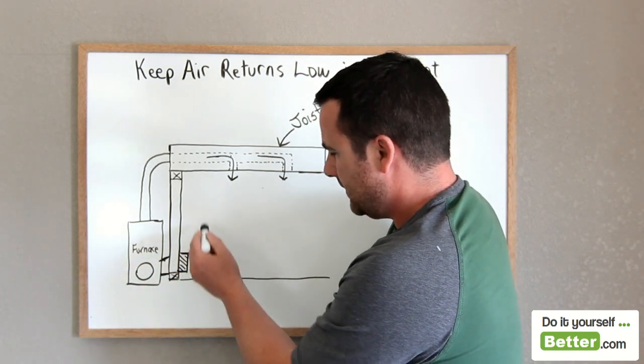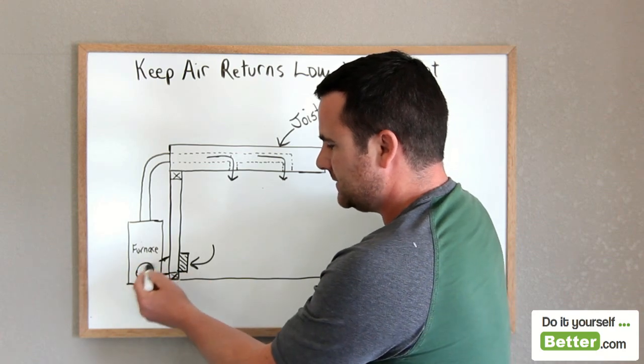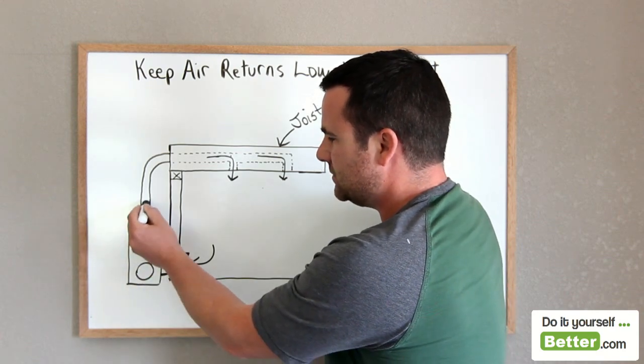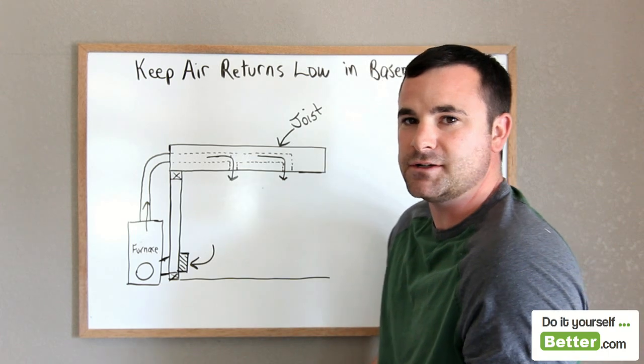Furnace kicks on. This is pulling air inward towards the furnace. It runs past all the flames, shoots up to your supply, and your hot air comes out of your heat registers.